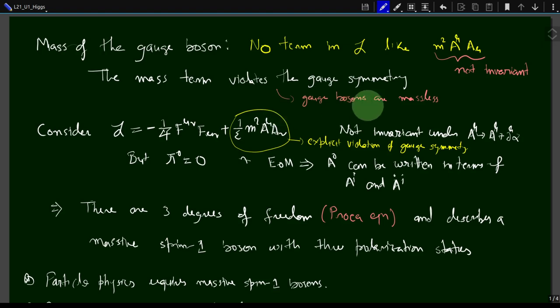All the gauge bosons we have talked about until now — the U(1) gauge boson, the photon, is one example — are massless. As long as the gauge symmetry is a good symmetry, the corresponding gauge boson will be massless. However, there are dynamical ways in which one can generate masses, and what we are going to talk about is one such classical model, not a quantum dynamical model for generation of mass.